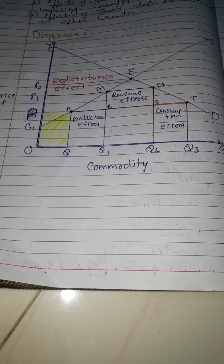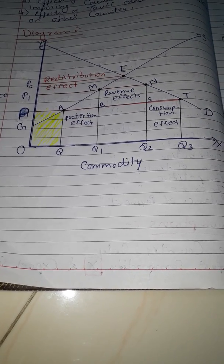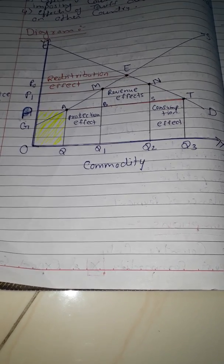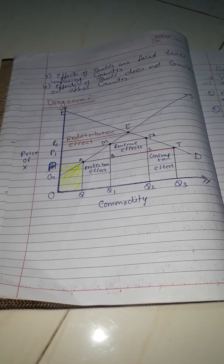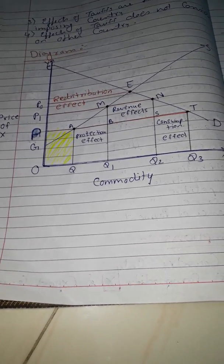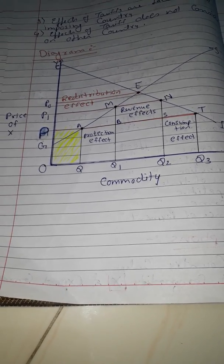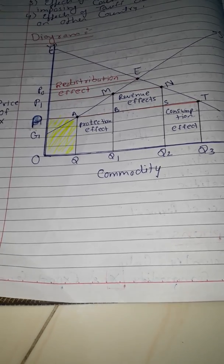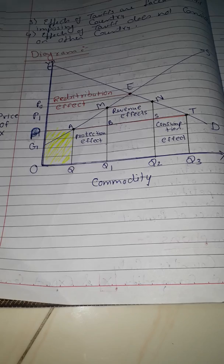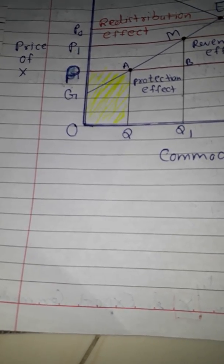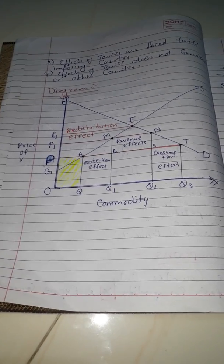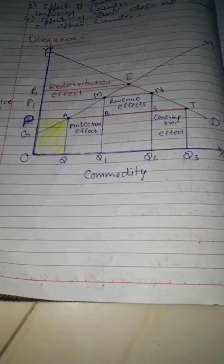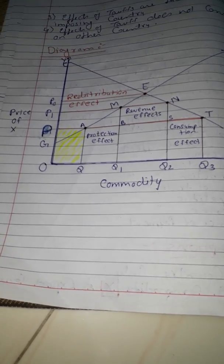Out of OQ3, we are producing OQ in our country, which means we are importing Q to Q3. At price OP, consumer surplus increases and becomes ΔpCT, while producer surplus decreases and becomes ΔGpA. After import, domestic producers have to decrease their price because of international competition. So in import, consumers are enjoying but producers suffer from loss.